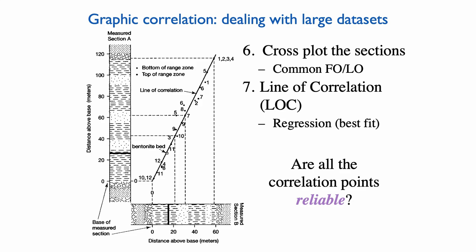And normally, if you have constant sedimentation rates and you have both sections that are complete, what you should see is a nice correlation line. Even if the sedimentation rates at both sections are different, because the succession of these different fossils should be predictable, you should see a nice correlation line.